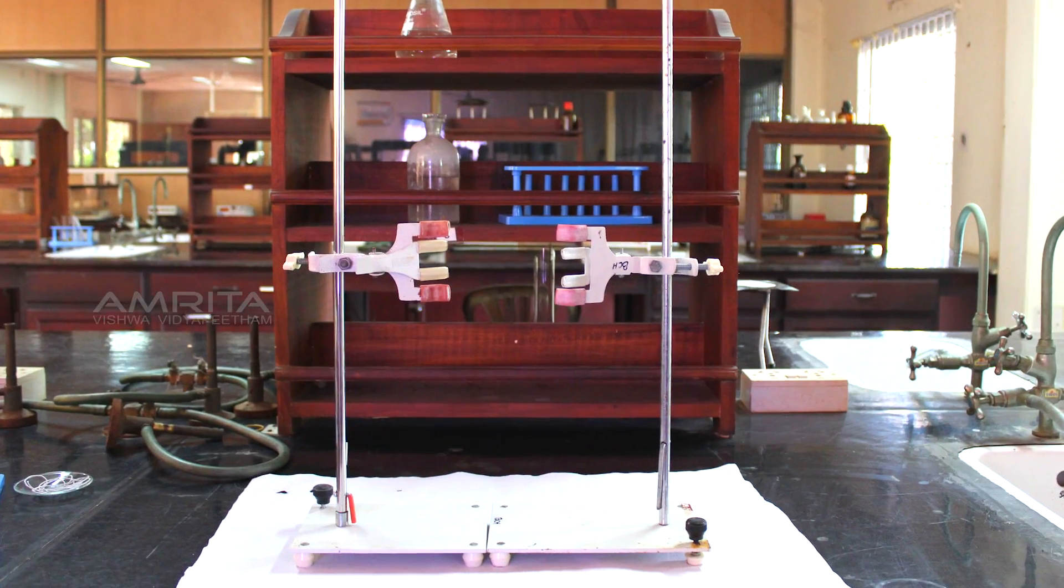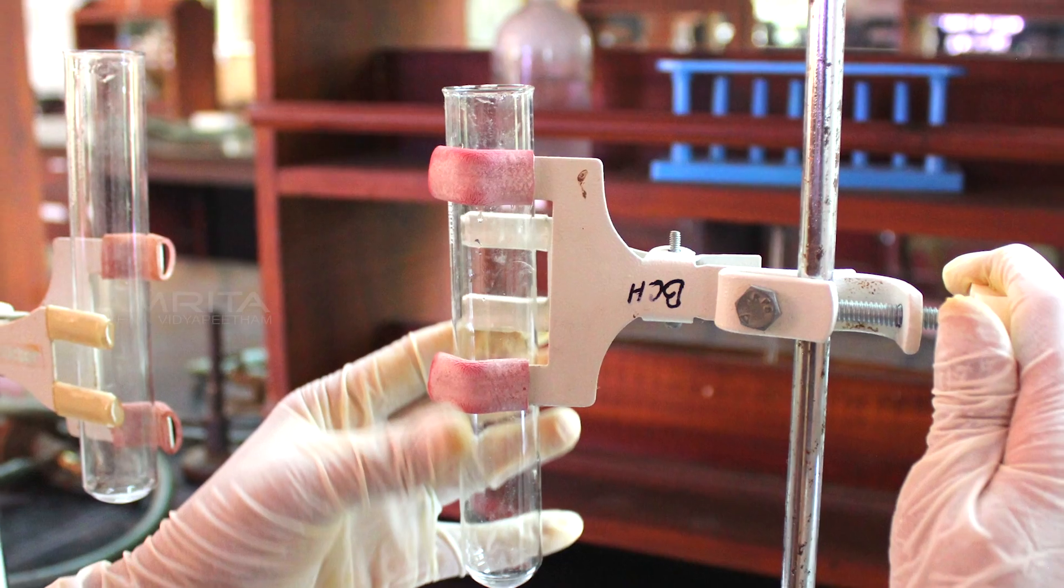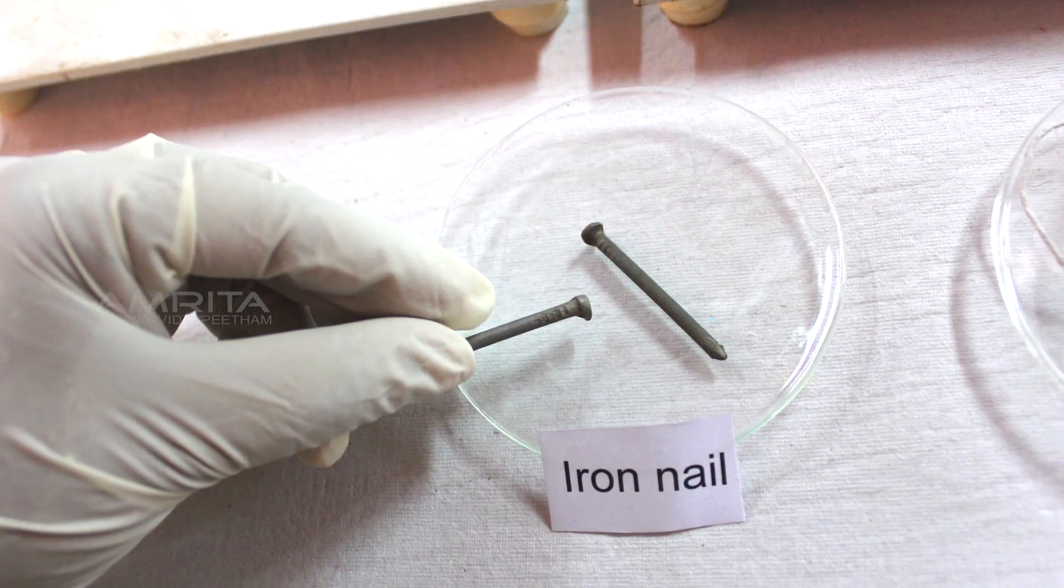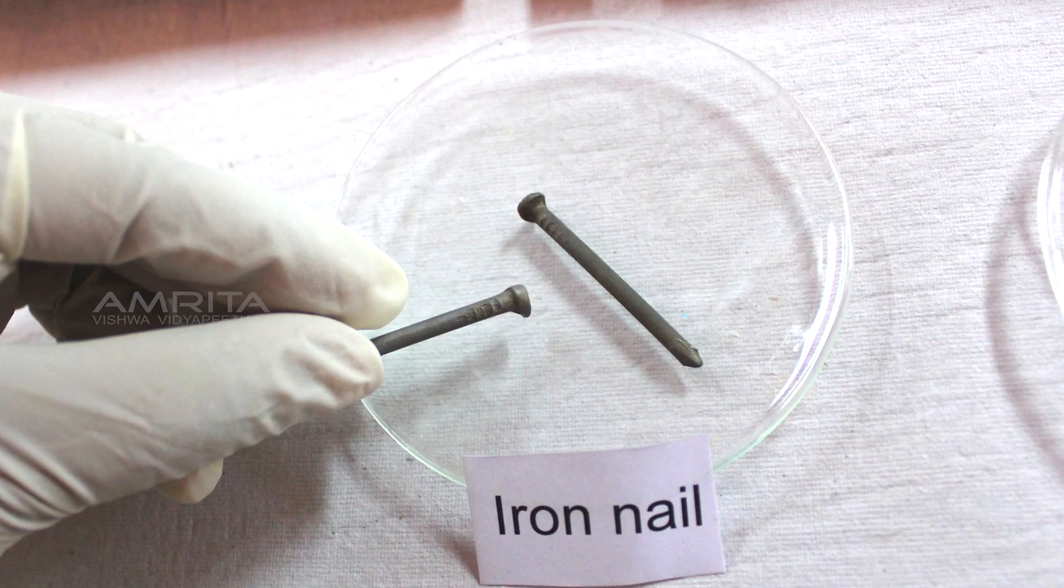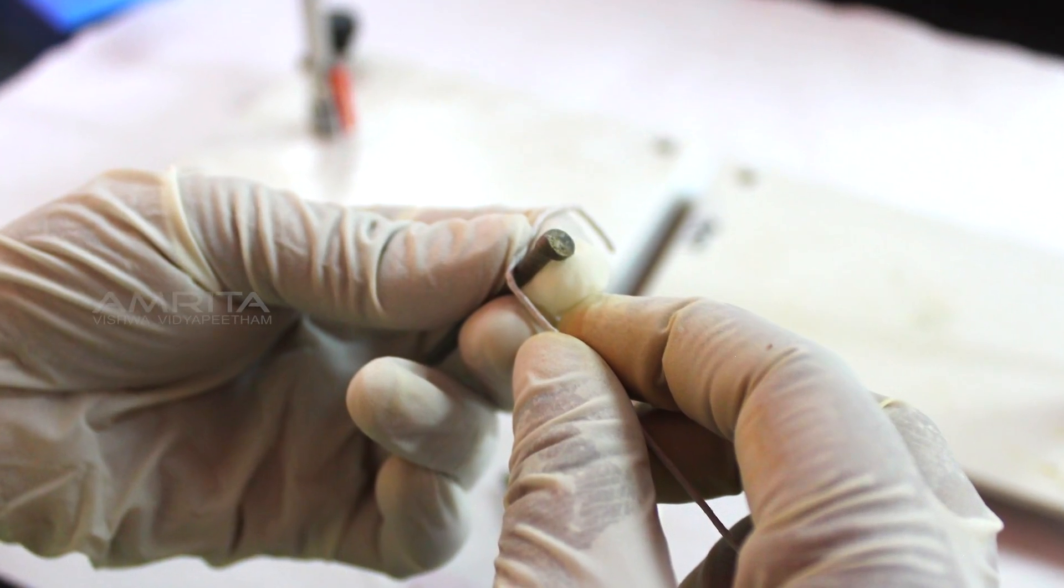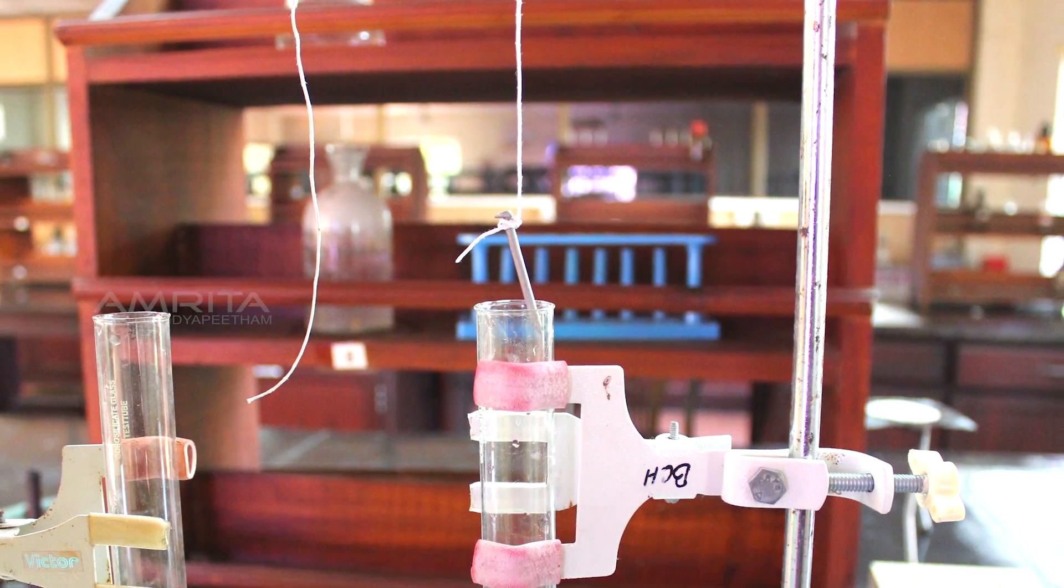Take two stands with clamps and fix one boiling tube in each stand. Pick one of the iron nails from the watch glass, tie it with a piece of thread, and hang it in one of the boiling tubes.